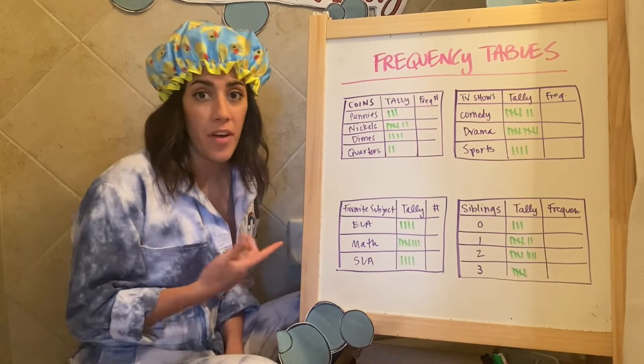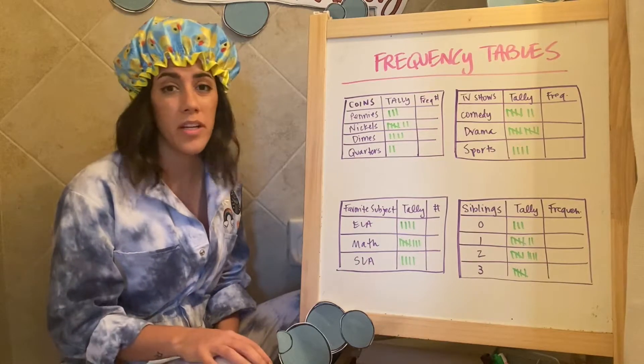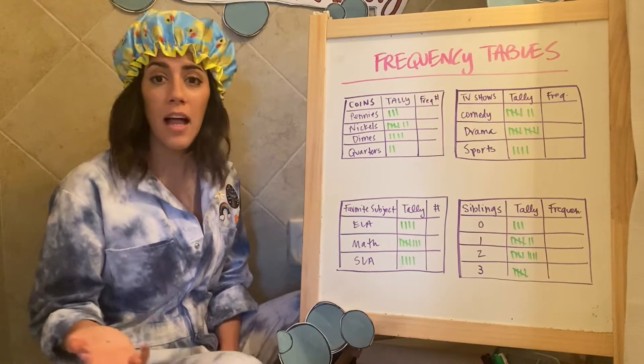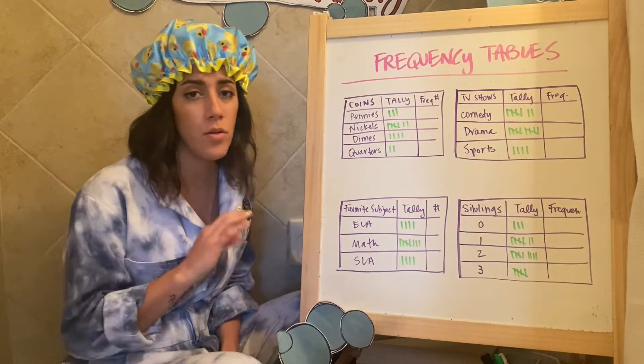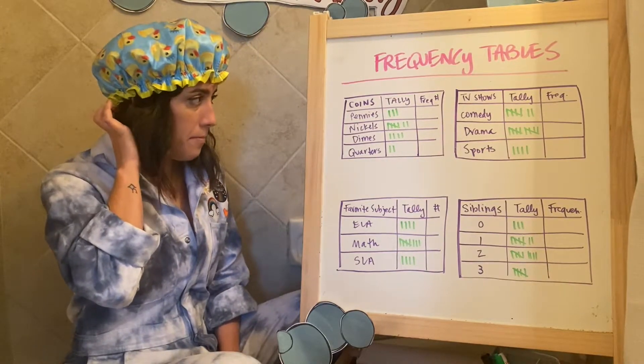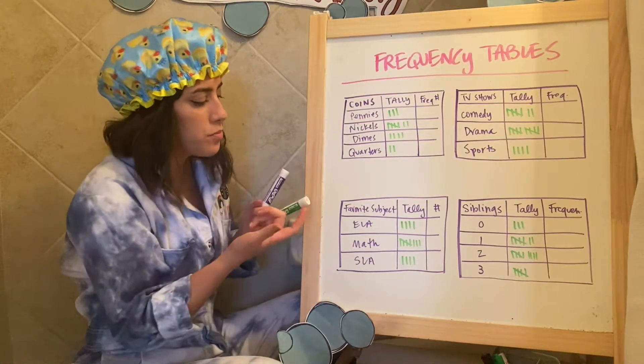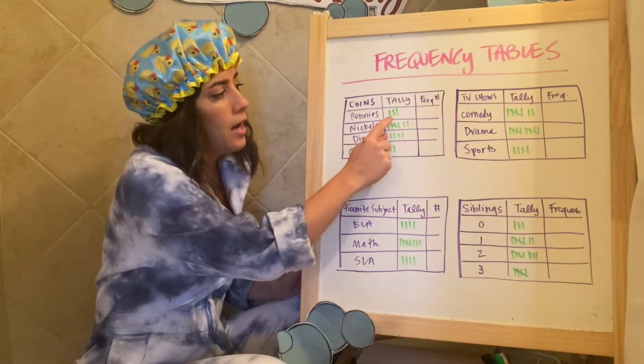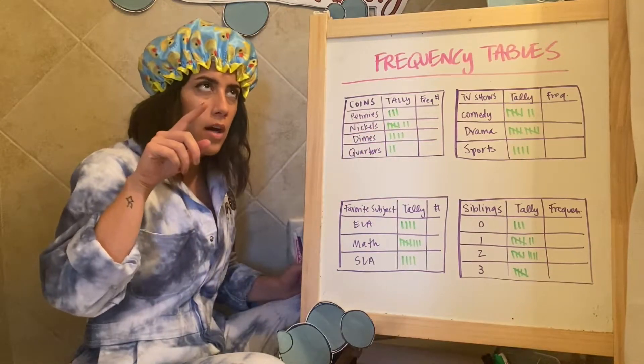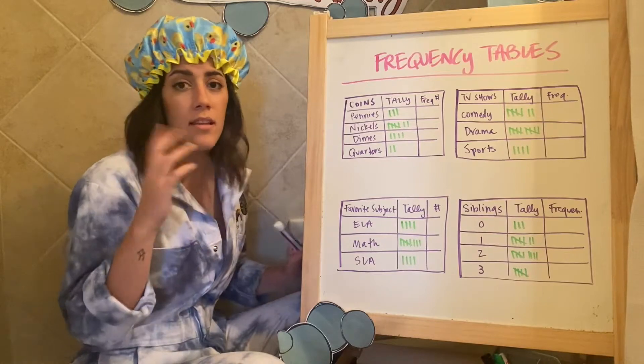Okay. So these are examples of other frequency tables. You could even make up your own if you wanted to survey your class, your family, your friends, whoever you wanted to ask questions to. These are just a couple that I've thought of. How many coins people had in their pockets and just by counting up the tallies, you should know that when it has a line across, you can count by fives when it doesn't, that means they're singular.